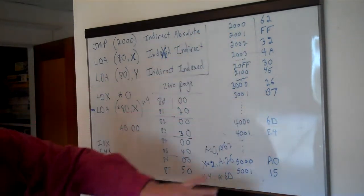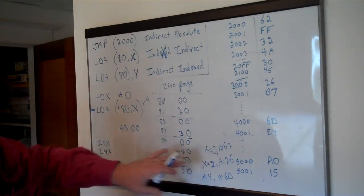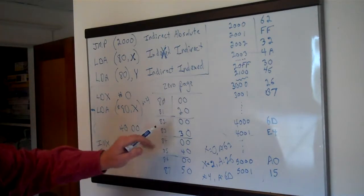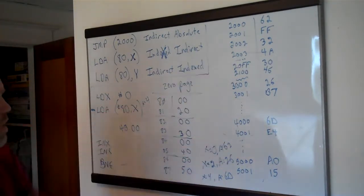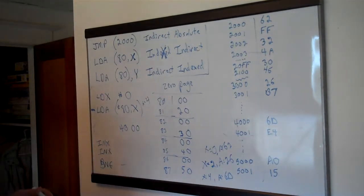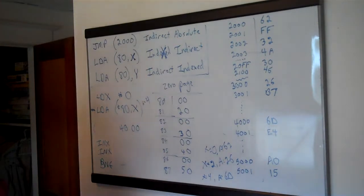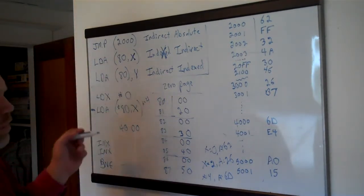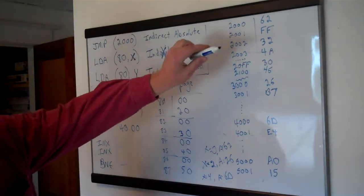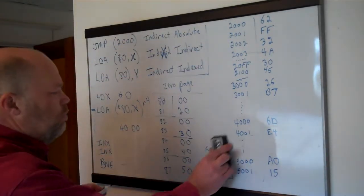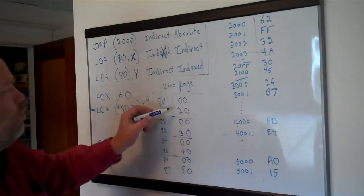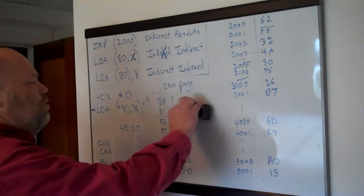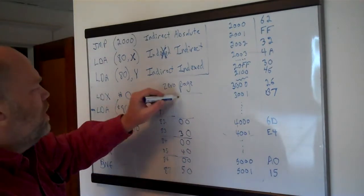You can adjust these so you can be walking through different blocks of memory. It's hard to think of a use for this off the cuff, but one I thought of: if you're writing a text editor and you have strings — lines of variable length — maybe you store them in memory and have a series of pointers in zero page pointing to the beginning of each line. Maybe your file starts at 2000.